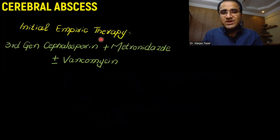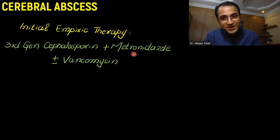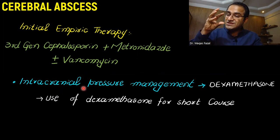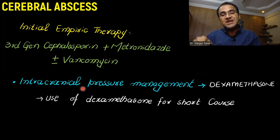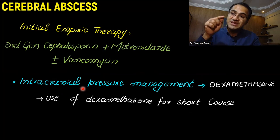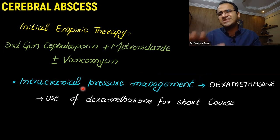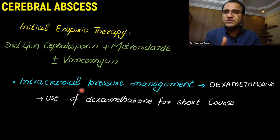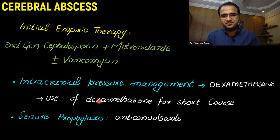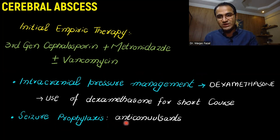In initial empiric therapy, you can give third-generation cephalosporins with metronidazole, with or without vancomycin. Intracranial pressure is usually raised in these patients due to the cerebral abscess exerting pressure on the brain. Dexamethasone can be used for short courses — its use in patients with increased intracranial pressure is controversial, but a short course can improve the patient's clinical status. If the patient is having seizures, you need to give seizure prophylaxis with anticonvulsants.